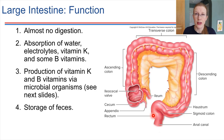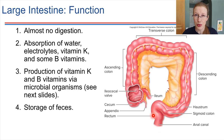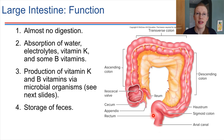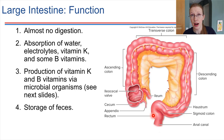Water absorption happens in the small intestine but continues in the large intestine. It makes sense to save water absorption until pretty late in the GI tract — if you absorbed water early on in the duodenum, the chyme would be a lot harder and more difficult to keep moving through the tract. By waiting to absorb water until later, this helps keep things moving along.